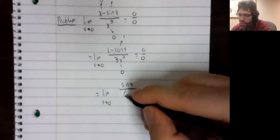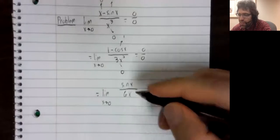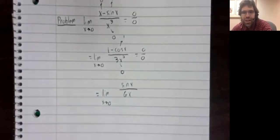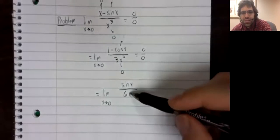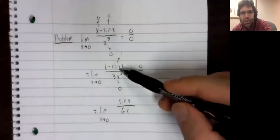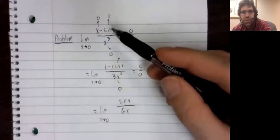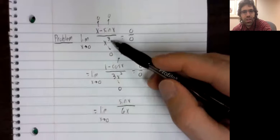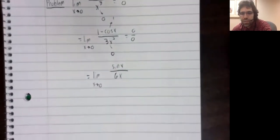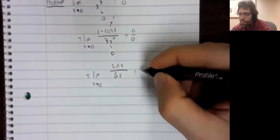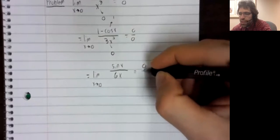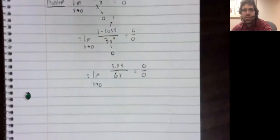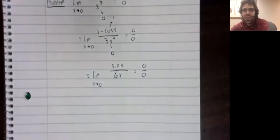The derivative of the denominator is 6x. And if we can take this limit, it will be the same as this limit, which will be the same as the limit we actually want. We can't, or at least we can't immediately, we get another indeterminate form.